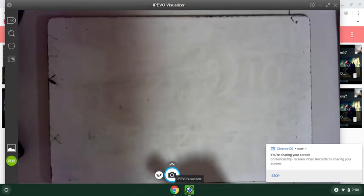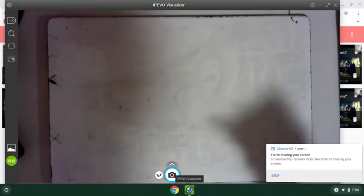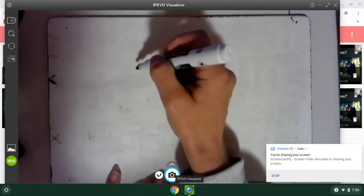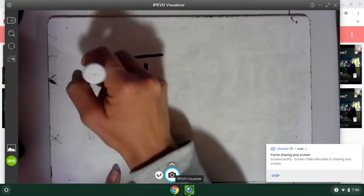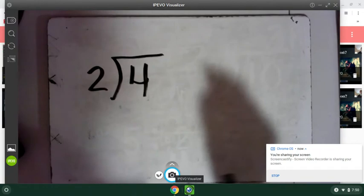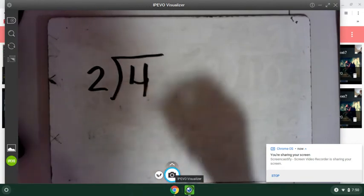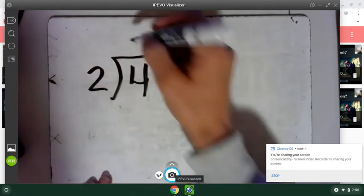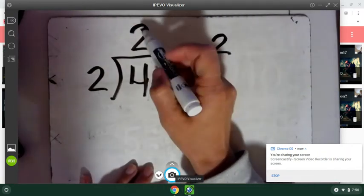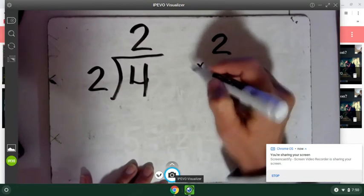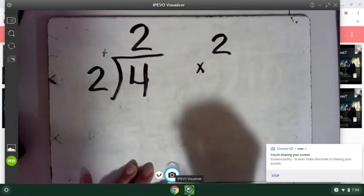The first thing we're going to do today is see how we check our long division using multiplication. When we had four pieces and we divided them up into groups of two, we saw we got two. I checked that because I knew that two times two equals four.